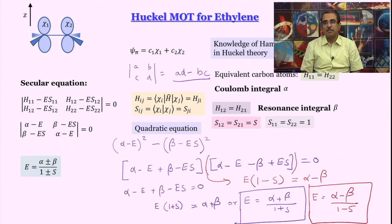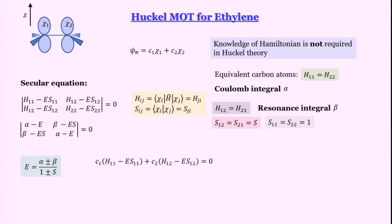Now we substitute these energy expressions back into the first secular equation to formally determine C1 and C2: C1(alpha minus E) + C2(beta minus E·S) = 0. This uses H11 = alpha, H12 = beta, S11 = 1, and S12 = S.